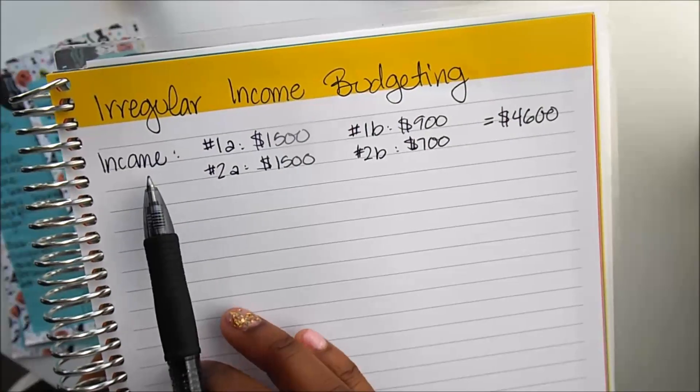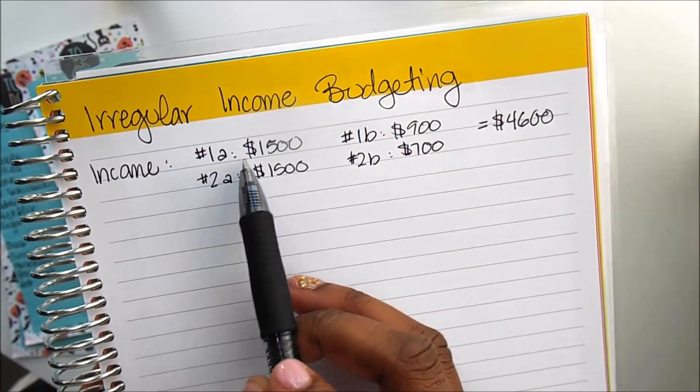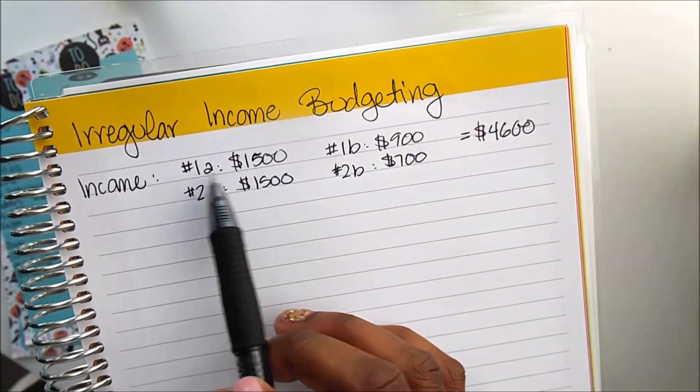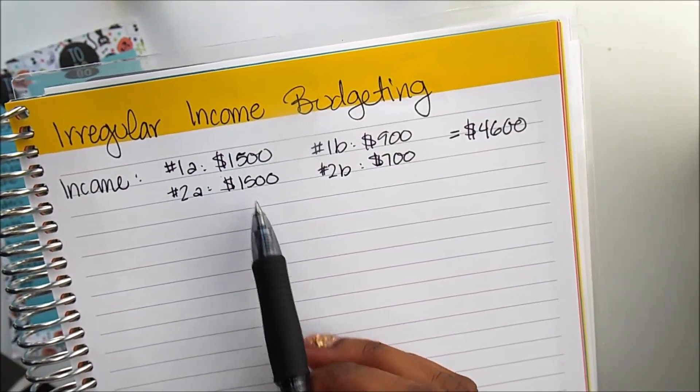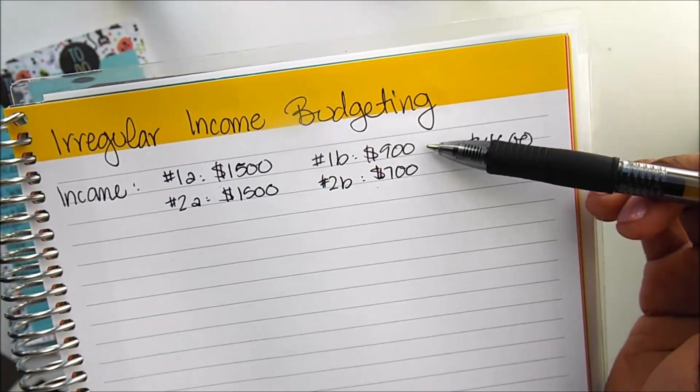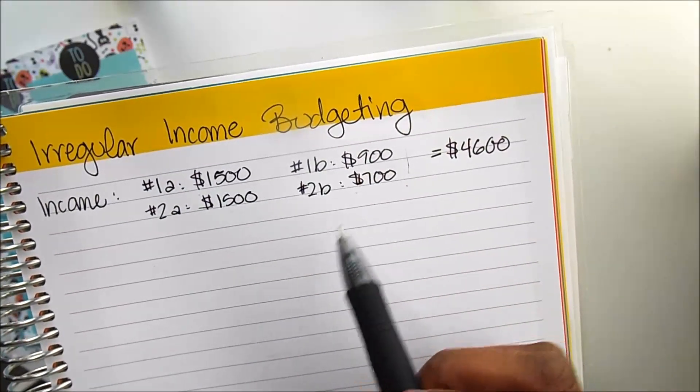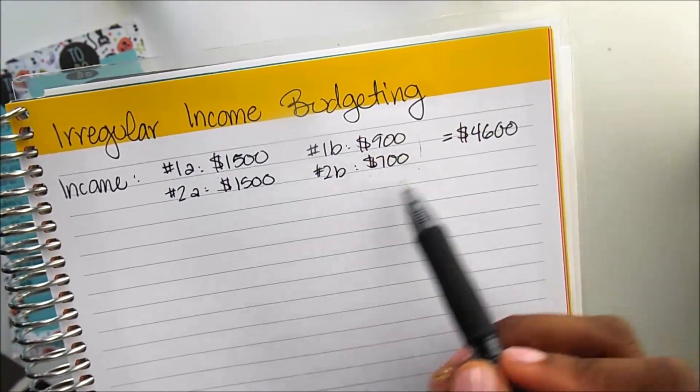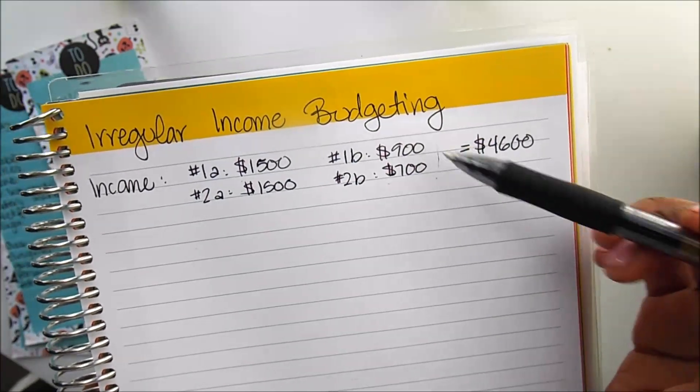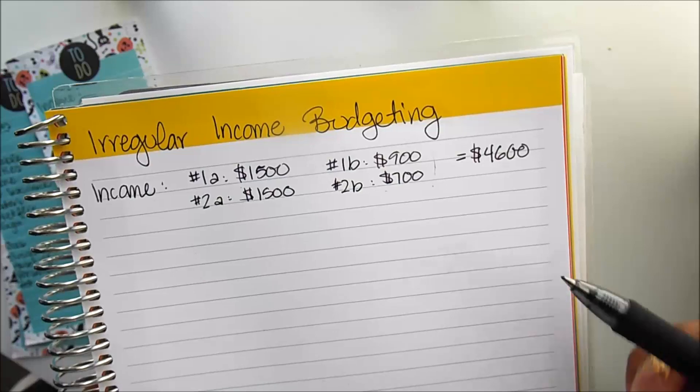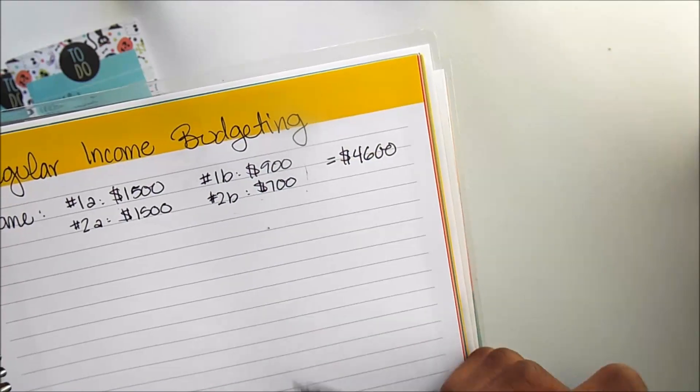So I just wrote out the incomes that I went ahead and just made up here. So the first line here is check number one, the first income is $1,500, the next is $900. And then for checks number two, the first income again would be $1,500, the second would be $700. So you can see there's a bit of a variance there. This income here is basically how my husband and our income is set up. Mine fluctuates on a monthly basis and his is regular, he's on a salary. So mine varies from basically paycheck to paycheck. So this is just the example of that variance. So the total that we have here is $4,600 for the month.